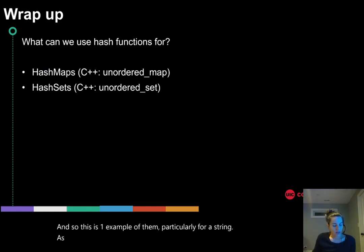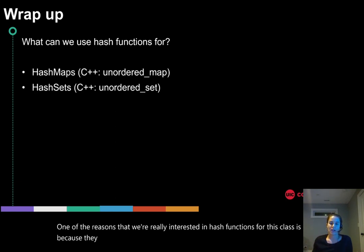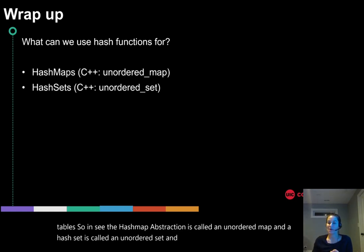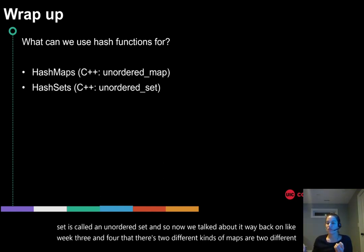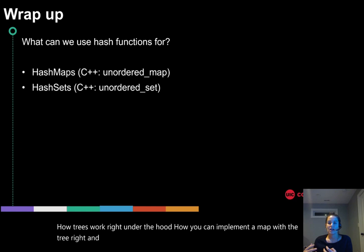As a final reminder, as we wrap up our discussion on hash functions, one of the reasons that we're really interested in hash functions for this class is because they can help us write and implement abstractions using hash tables. In C++, the hash map abstraction is called an unordered map and a hash set is called an unordered set. We talked about it way back on week three and four—there's two different kinds of maps, two different types of sets. You've now fully explored how trees work under the hood, how you can implement a map with a tree, and now you're able to see exactly why implementing a map with a hash table is O(1).